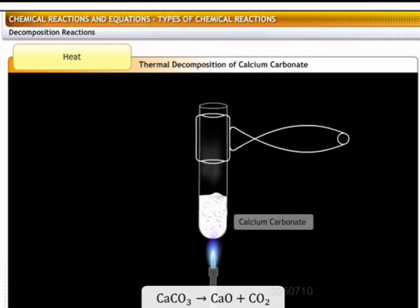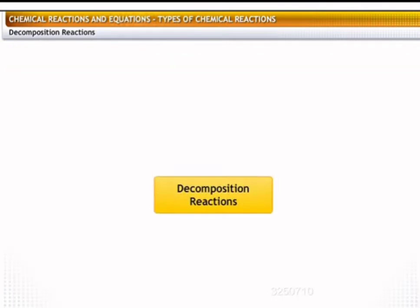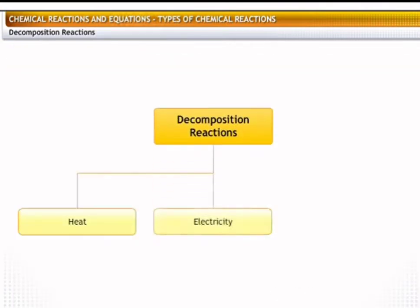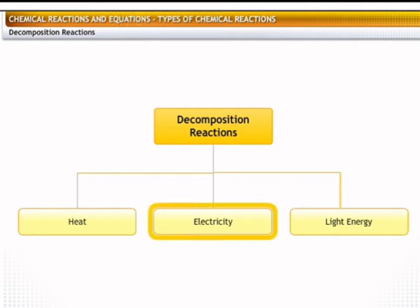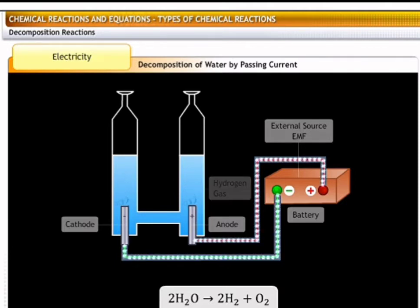For example, calcium carbonate on thermal decomposition gives calcium oxide or quicklime and carbon dioxide. Decomposition of a substance by passing current through it is called electrolysis. For example, when electric current is passed through acidified water, it decomposes to give hydrogen gas and oxygen gas.